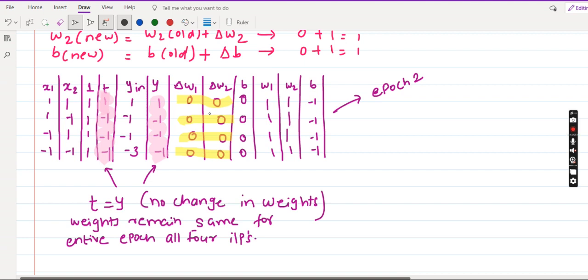When do you stop changing the weights? You stop changing the weights when your t, your target, becomes equal to your output y. And here you have no change in the weight. For the entire range of the epoch, if your target is equal to y, then we don't change the weight. So this will be stopped.